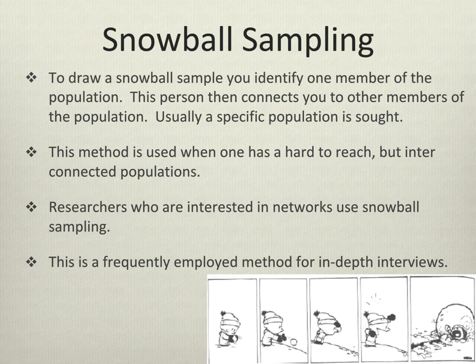Snowball sampling is when you're connected with one or more members of an interconnected but hard-to-find population, and you use those people to help you find other members of the community. This works really well if you're talking to people who are hard to reach but interconnected. Researchers interested in network theory also use snowball sampling. It's most often used for in-depth interviews.